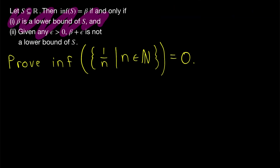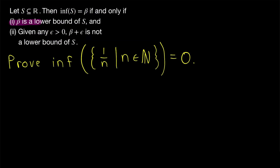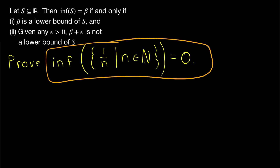Let's quickly recap this equivalent definition. It states that the infimum is a lower bound, and then it says if we add any positive number epsilon to the infimum, we no longer have a lower bound — because, of course, the infimum is the greatest lower bound, so we can't add something to it and still have a lower bound. So we'll prove that zero satisfies these two conditions and thus prove that the infimum of our set is equal to zero.